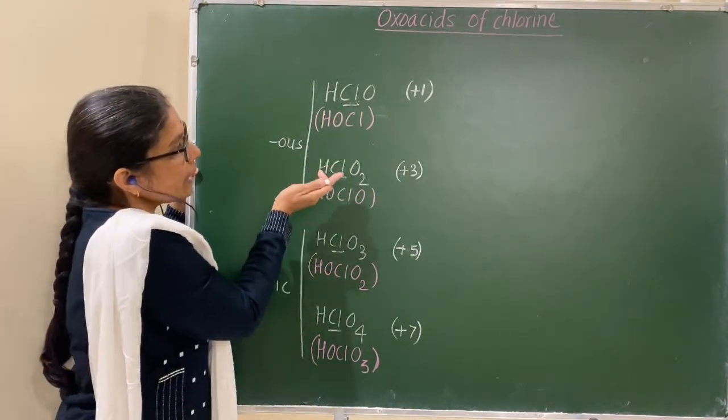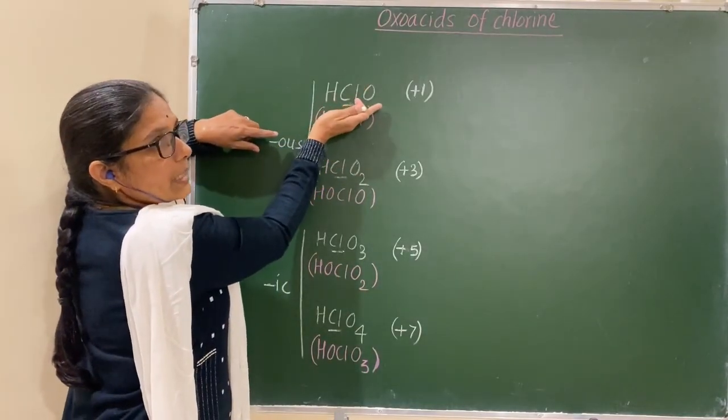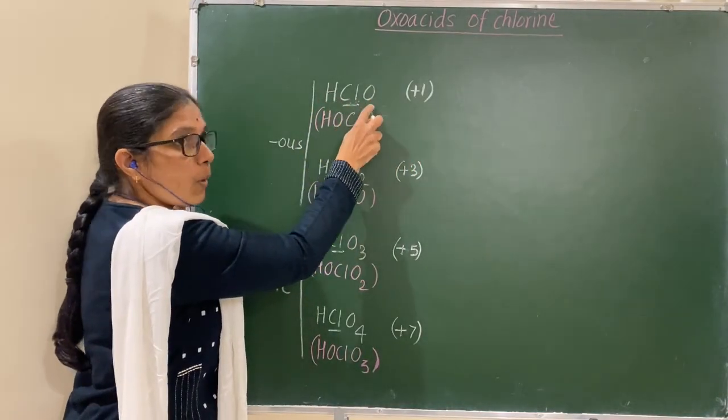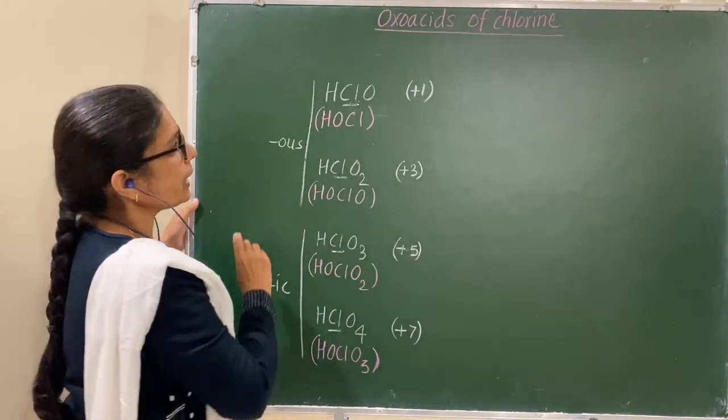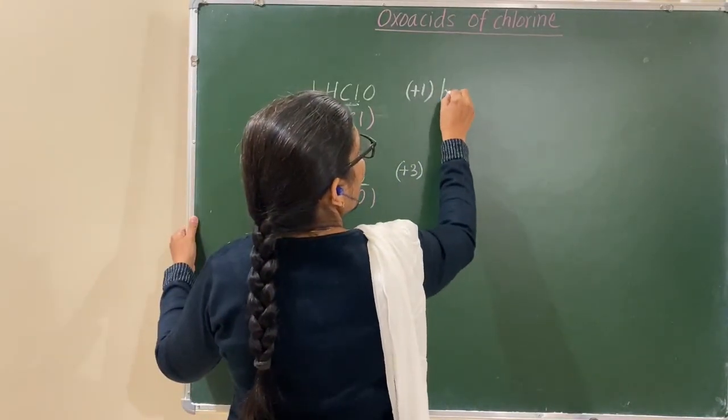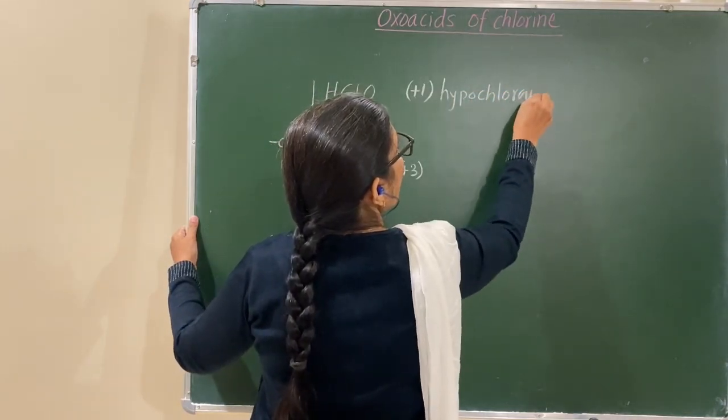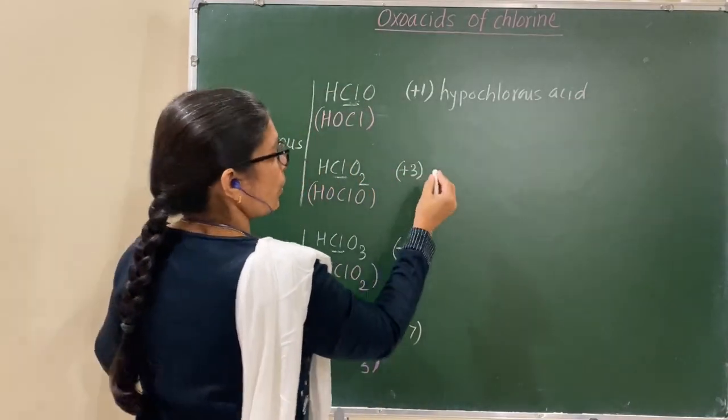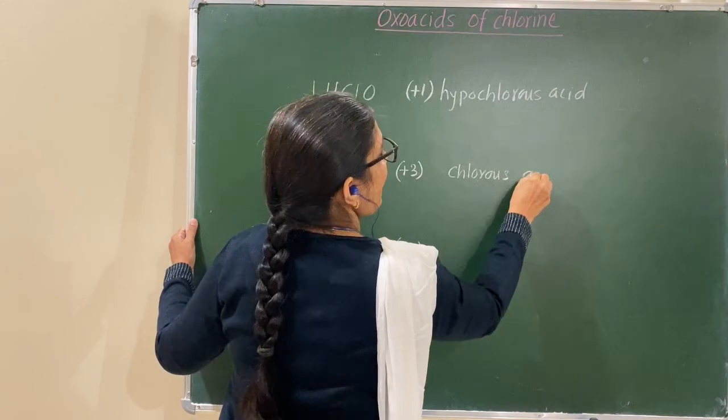In that, the lowest one, that is this one, is hypo. Therefore, this is hypochlorous, while this is chlorous. Therefore, the name of this compound is hypochlorous acid. Chlorous acid.